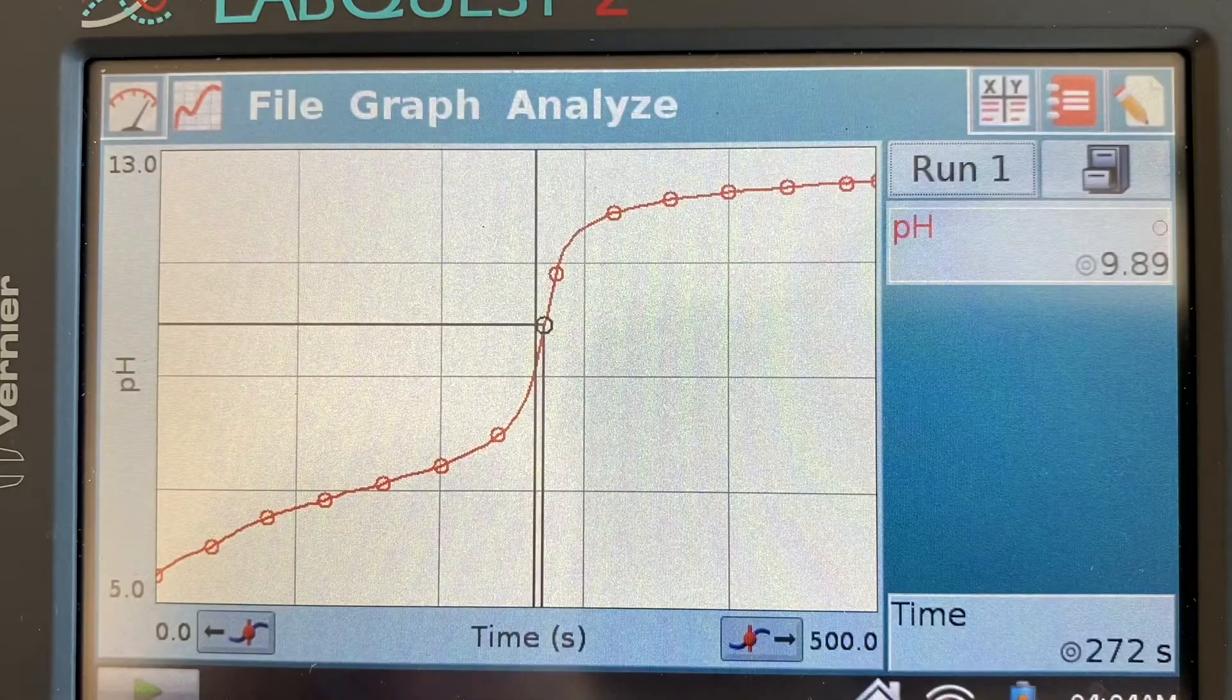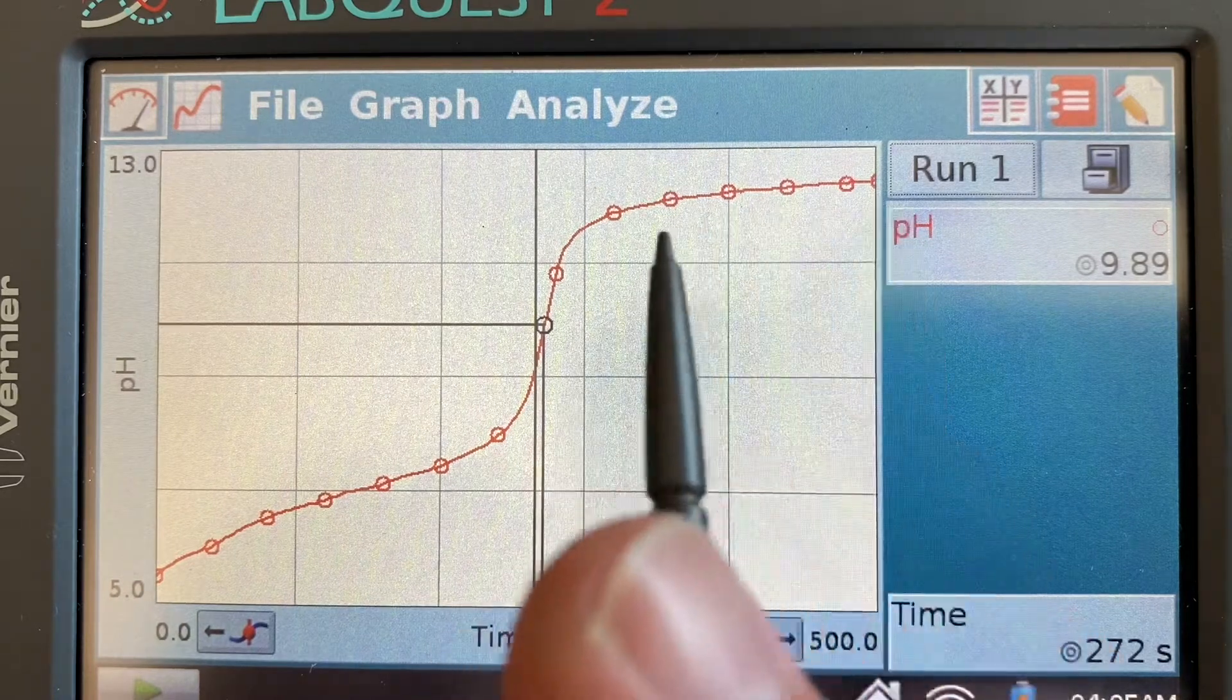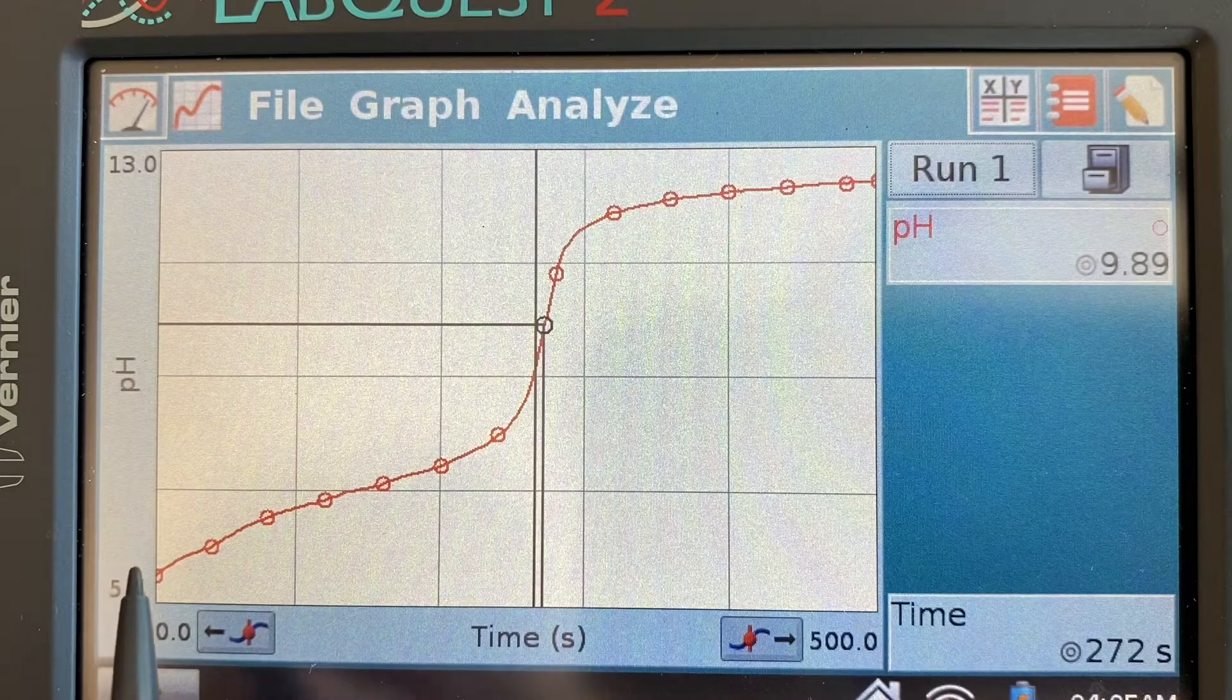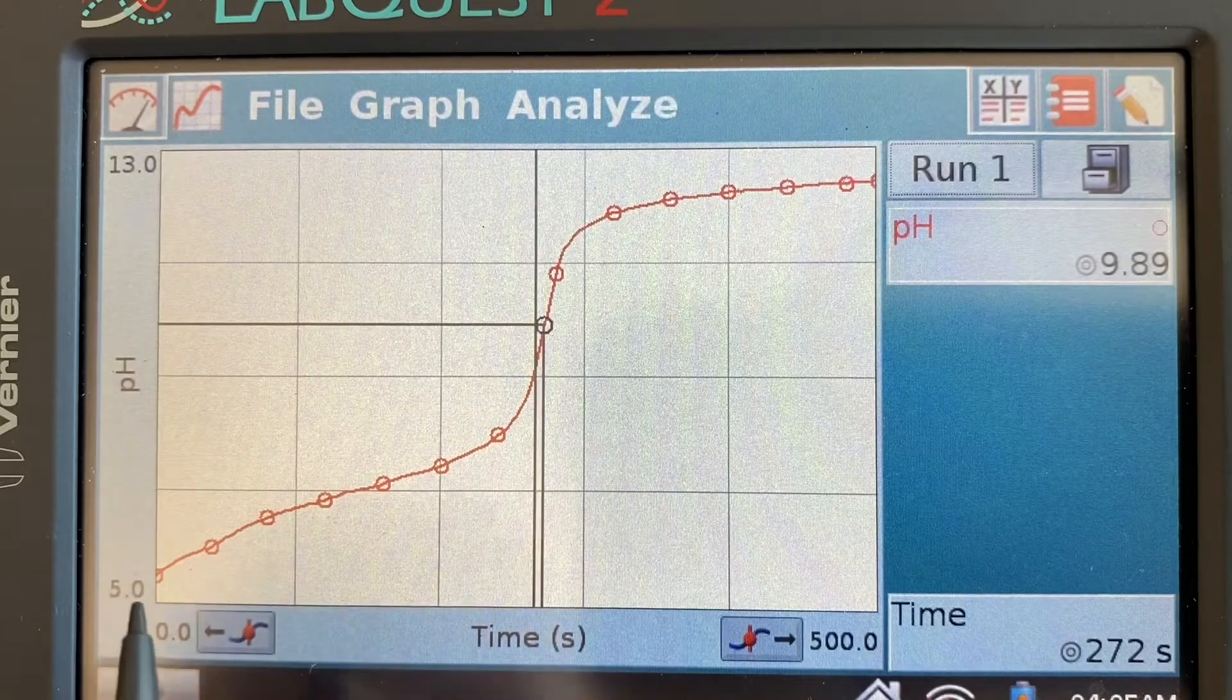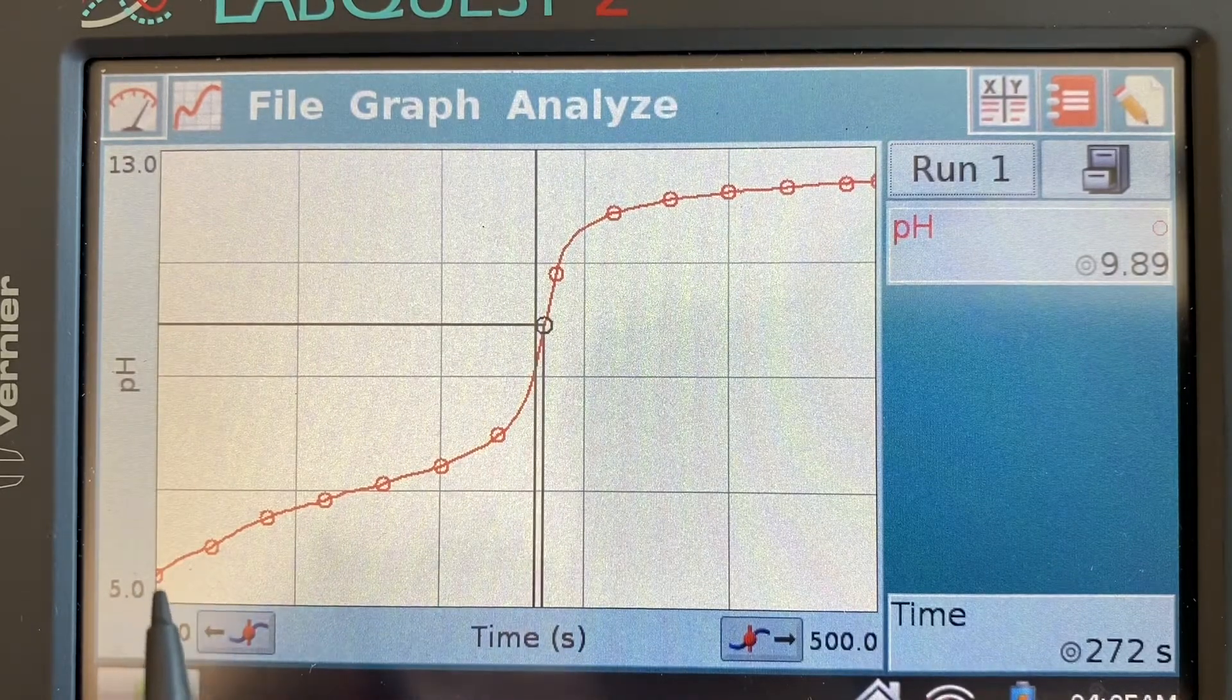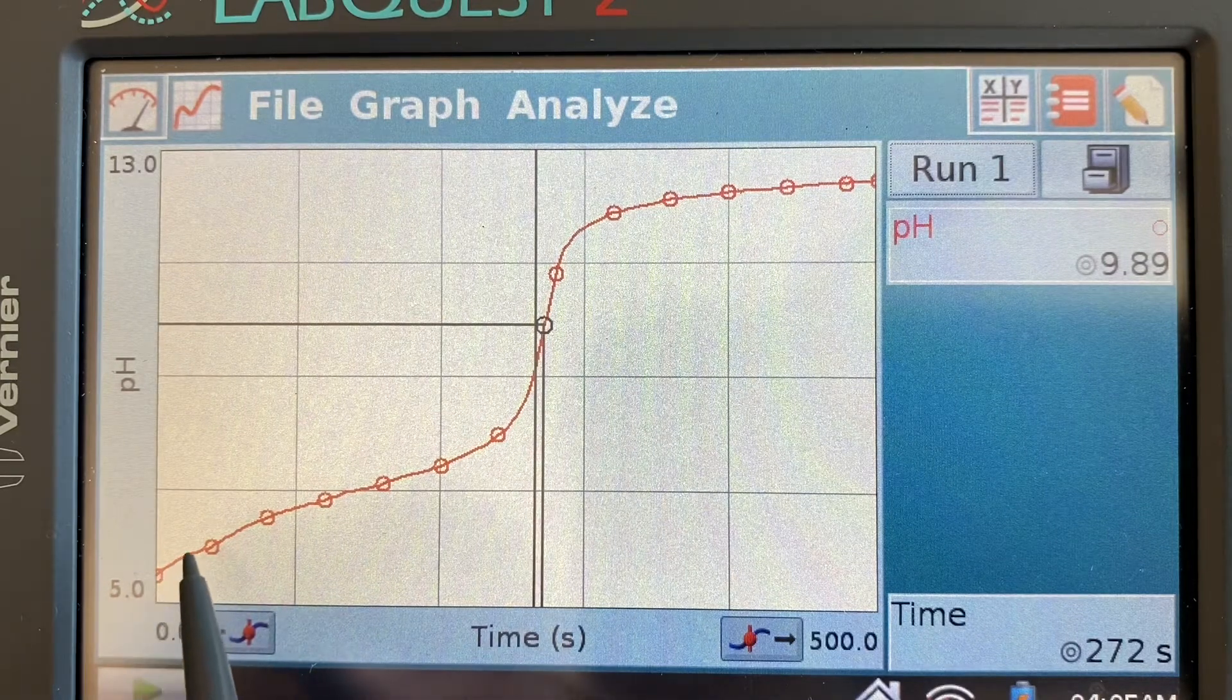This is the graph of our titration of our weak acid and I want you to notice a couple of key characteristics here. First we start out with a pH of just above 5. So it is acidic but it's not terribly acidic, and that indicates that yes we are working with a weak acid and not a strong acid.